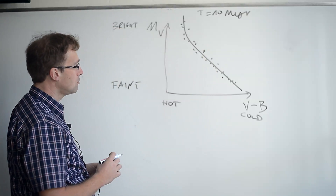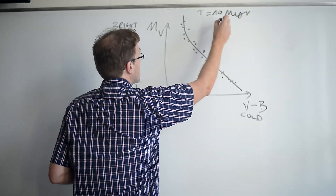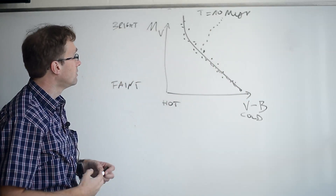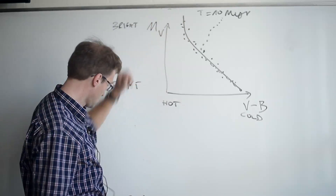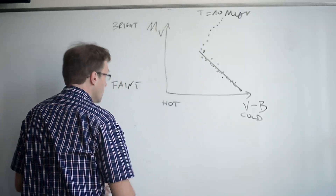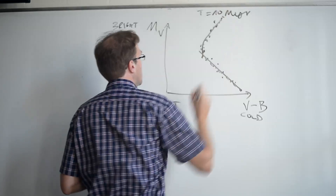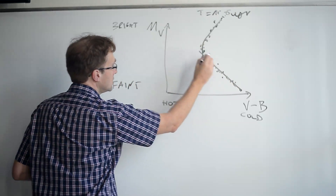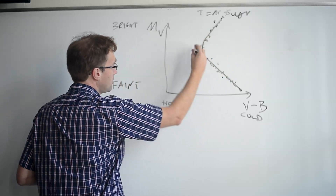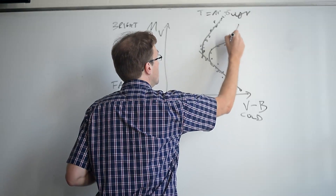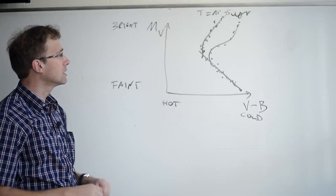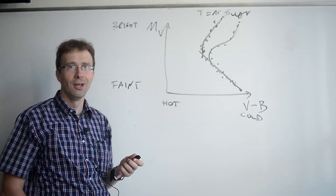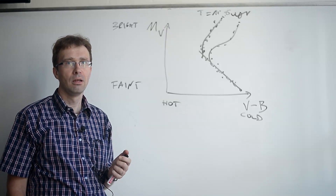The color-magnitude diagram of a star cluster does change with time as the cluster is aging. For example, if you look at a giga-year-old star cluster, the color-magnitude diagram will look like the red distribution shown here — all these bright massive stars have disappeared. And then if you look at a ten-giga-year-old cluster, this point where you don't see stars anymore has gone down even further, because more and more stars have died away. So basically by looking at the color-magnitude diagram of a cluster and comparing it with theoretical isochrones, one can determine the age of a star cluster.